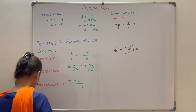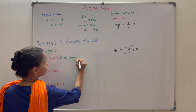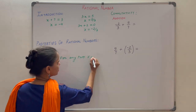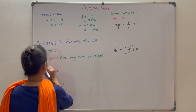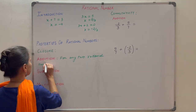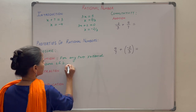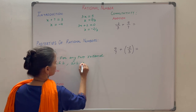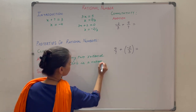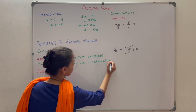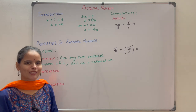We can generalize: for any two rational numbers A and B, A plus B is a rational number. That means rational numbers are closed under addition.